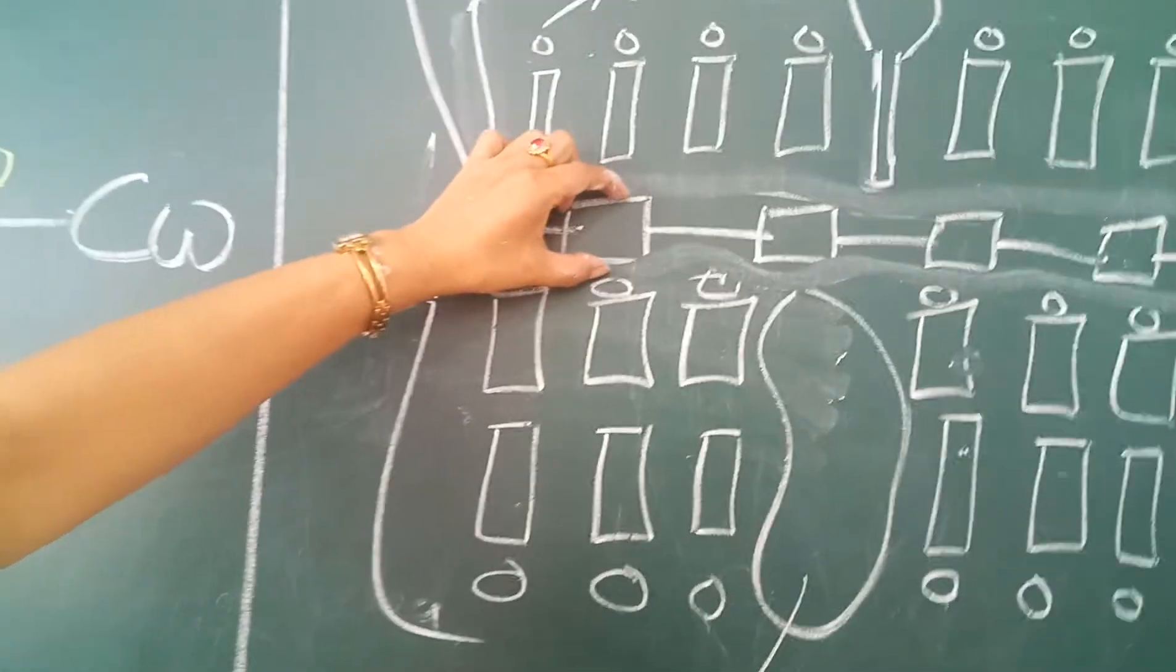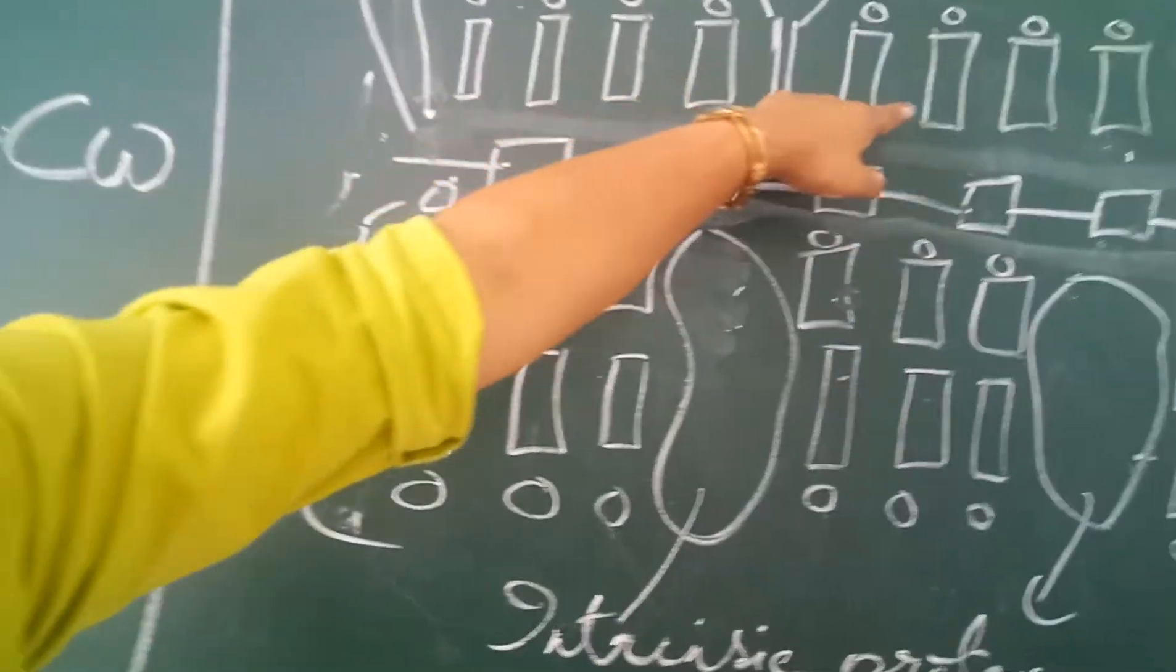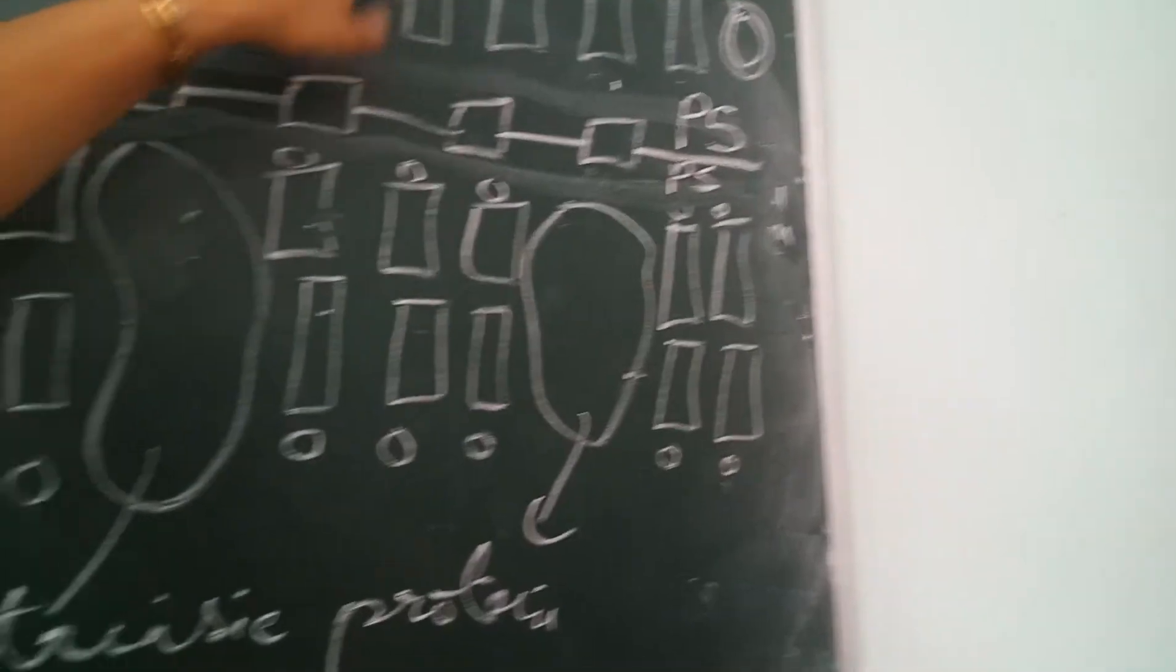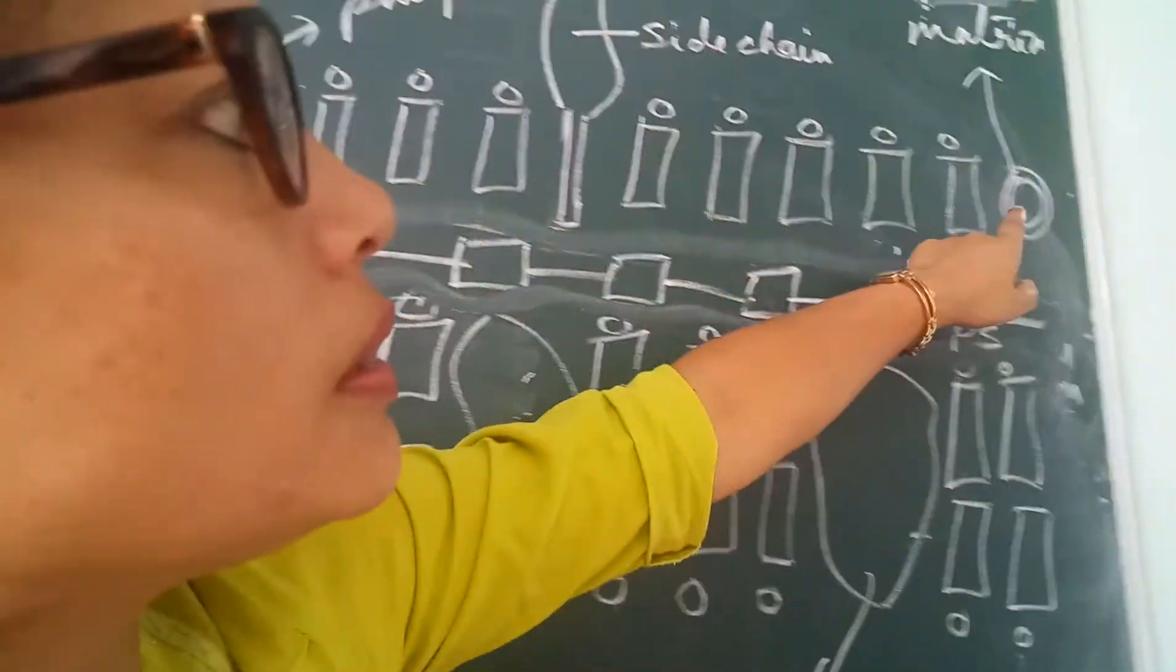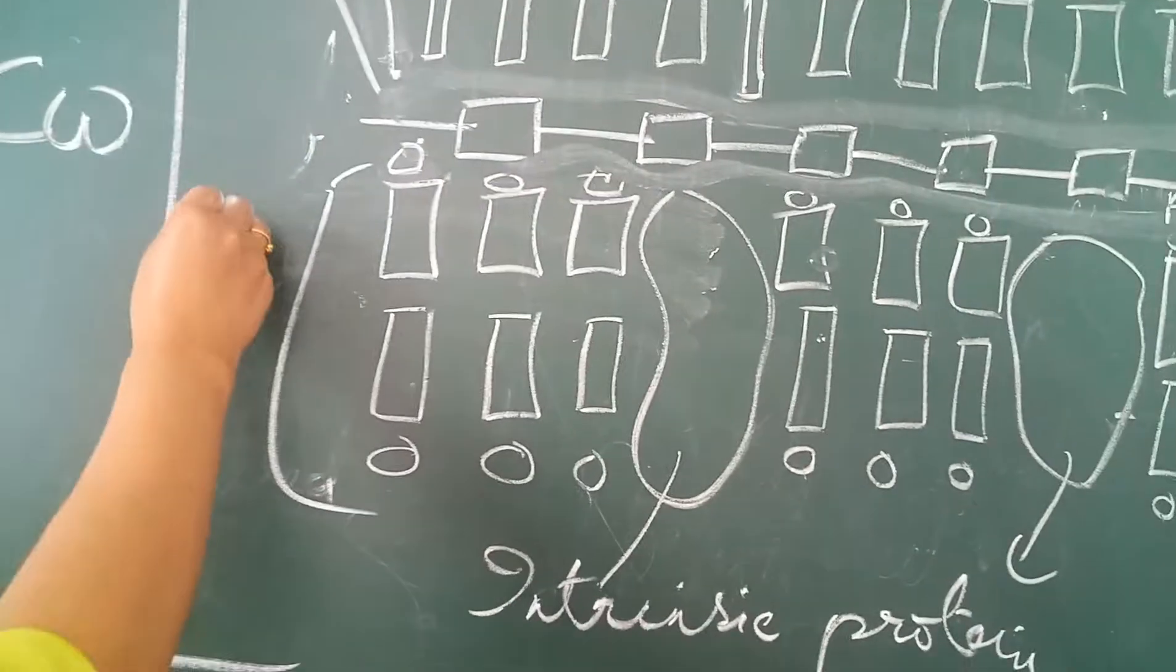This is the peptidoglycan layer. Outer membrane. You get these phospholipid layers. This is a side chain. This is a protein matrix. Inner to this, you get a phospholipid bilayer.